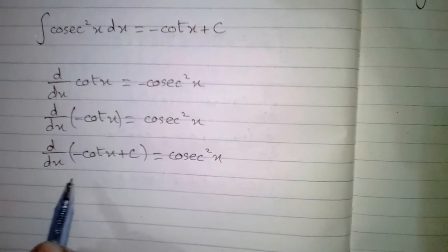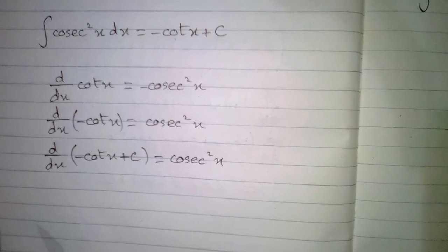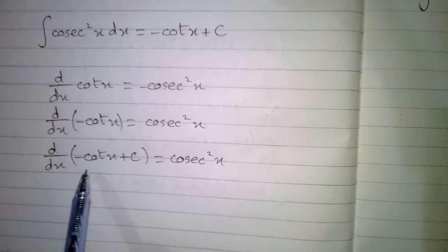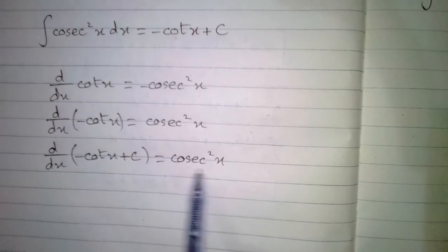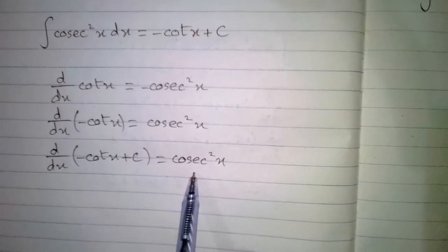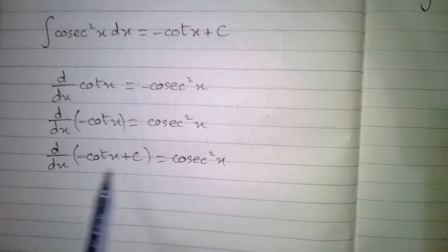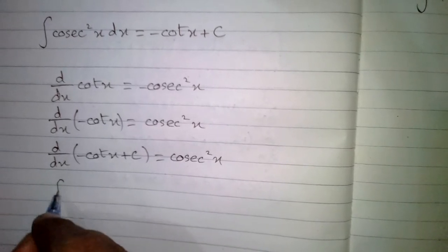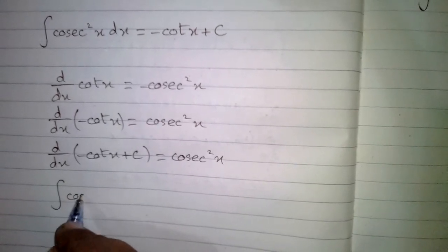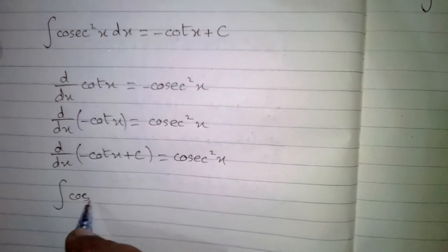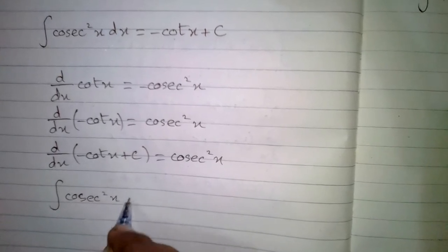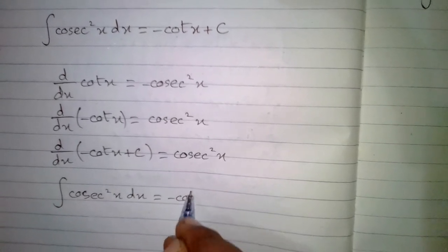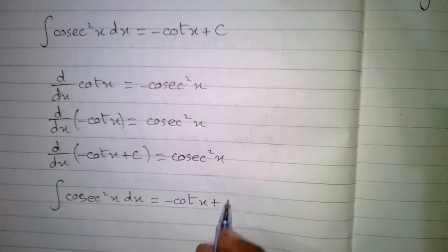We know that integration is the reverse process of differentiation. So, if the derivative of minus cot x plus c is cosec square x, then the integral of cosec square x is minus cot x plus c. Thus, the integral of cosec square x with respect to x is minus cot x plus c.